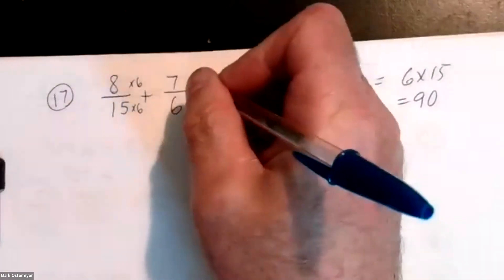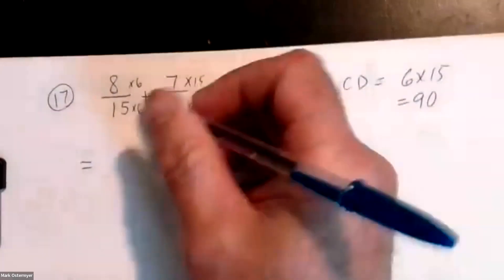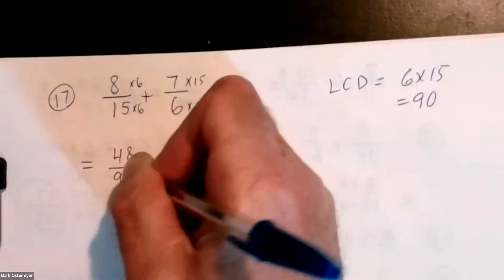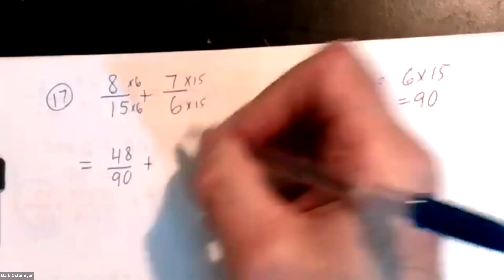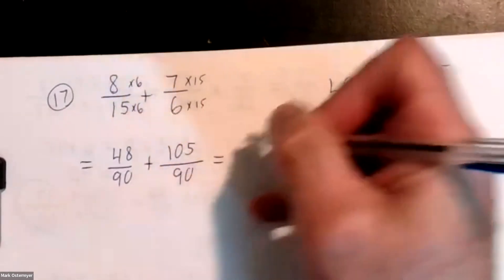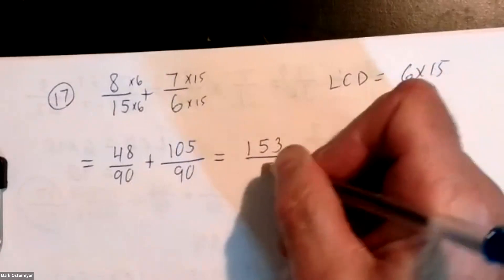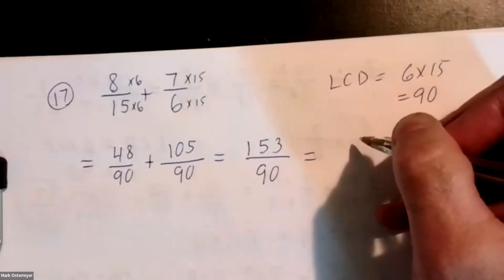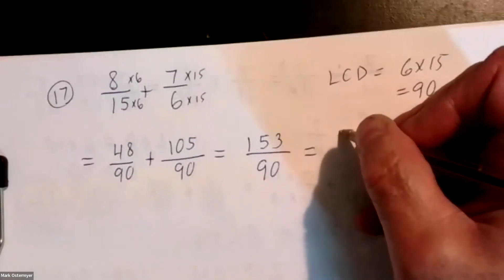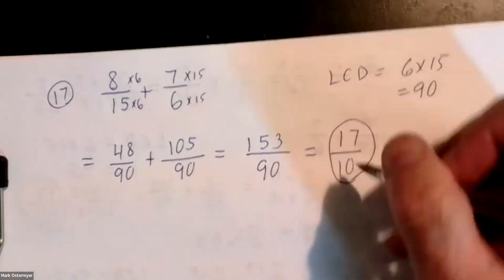Eight times six is forty-eight over ninety. Seven times fifteen is one hundred five. That gives one hundred fifty-three over ninety — we already did this problem before. Reduce down by nine, down to seventeen over ten.